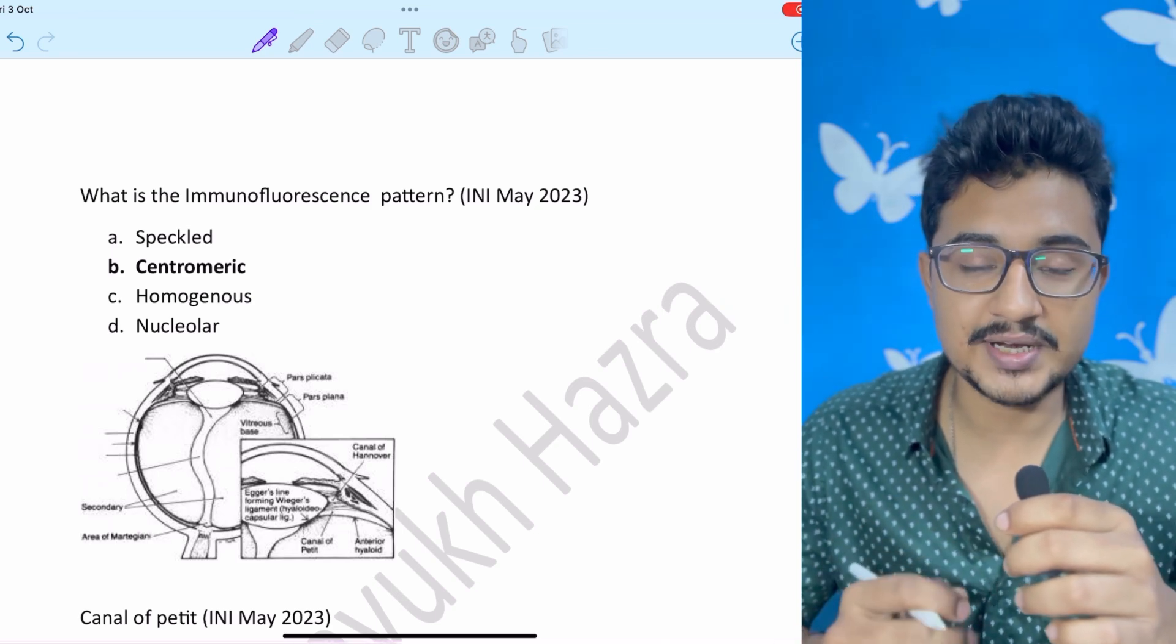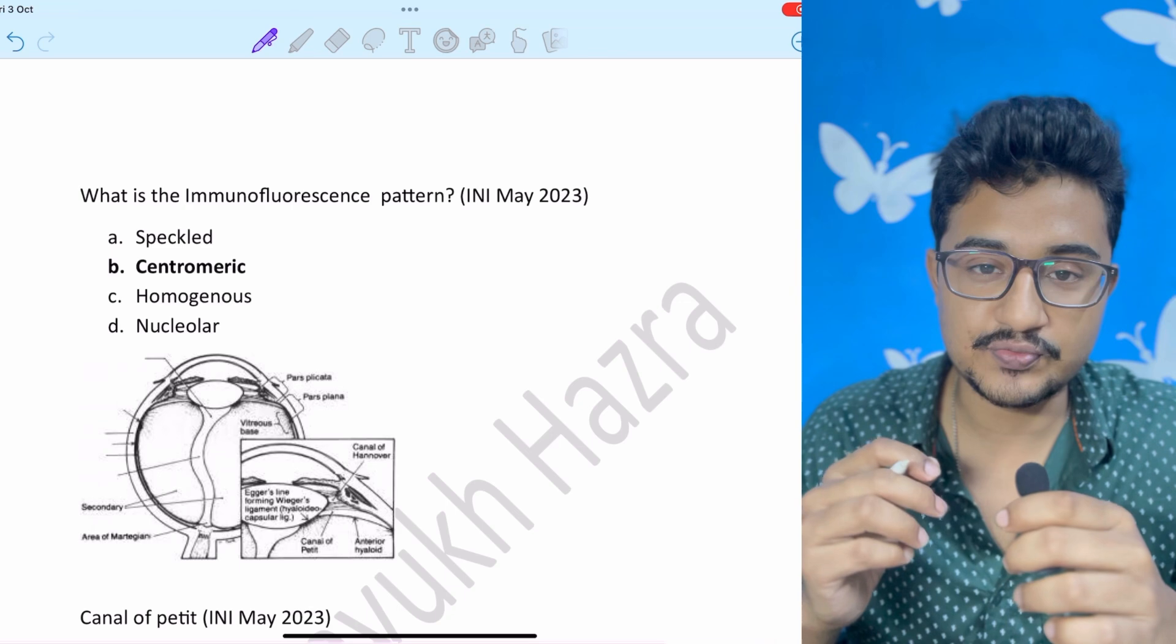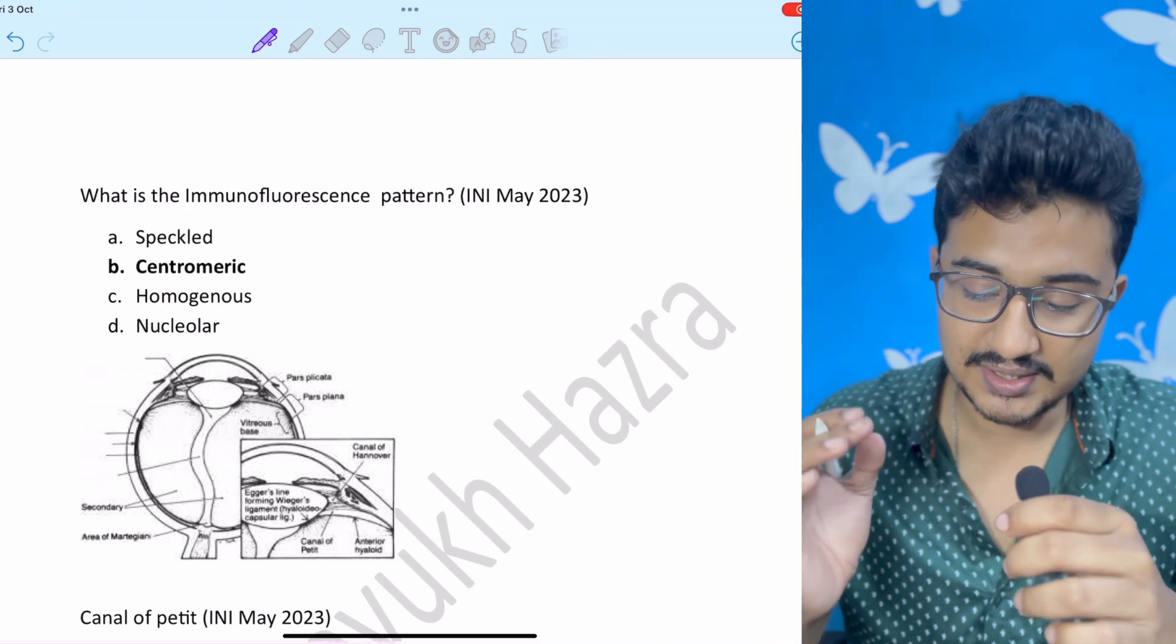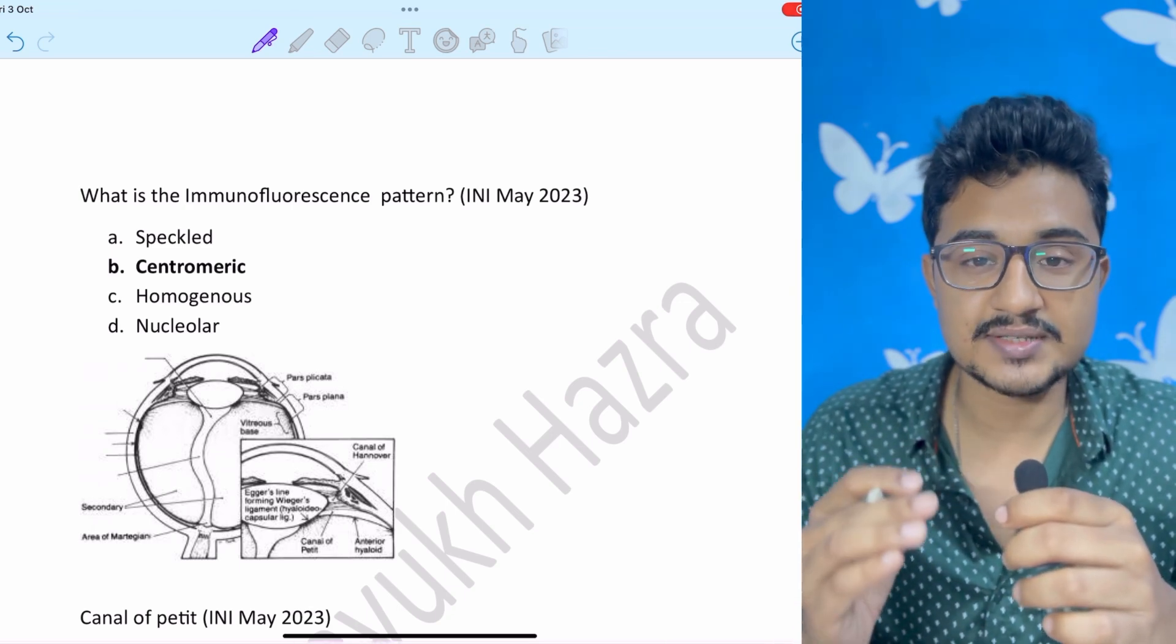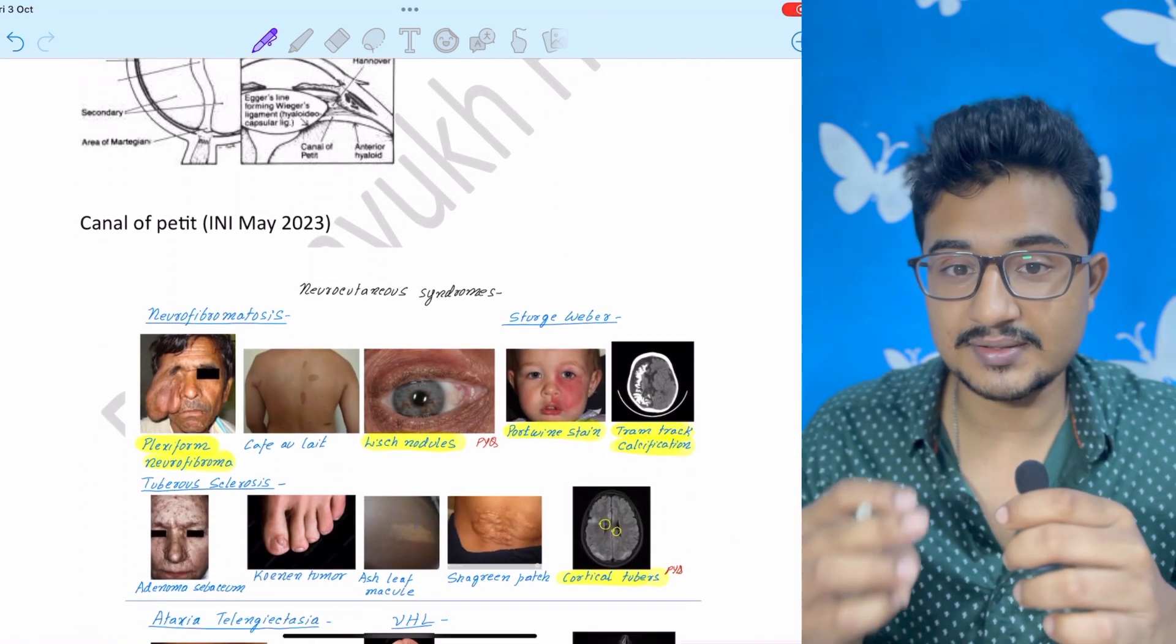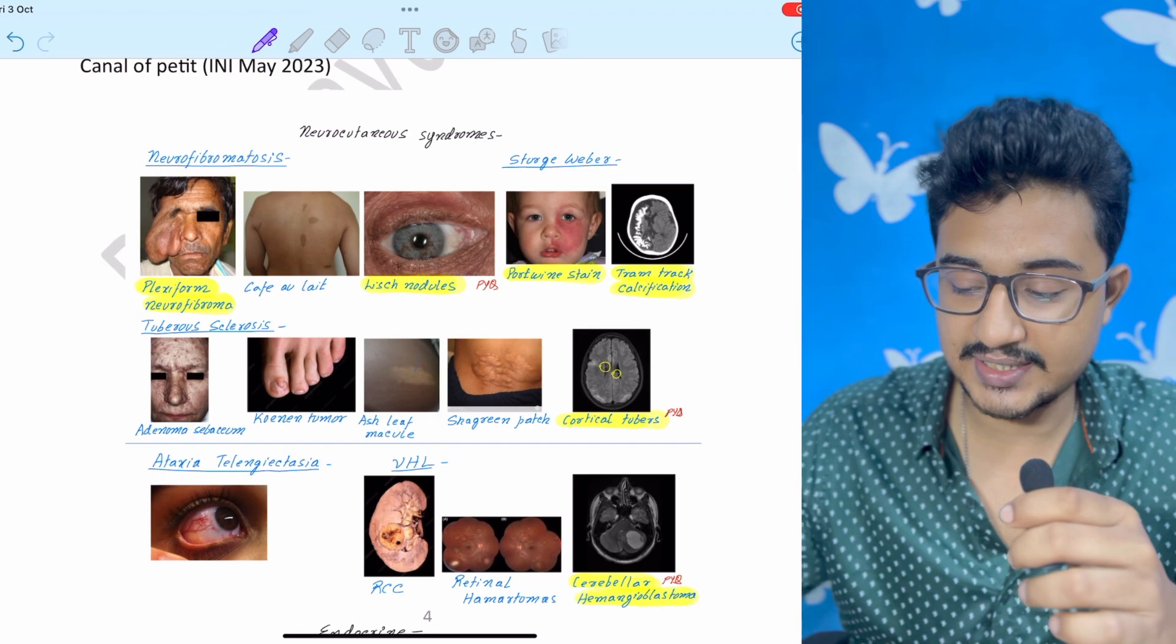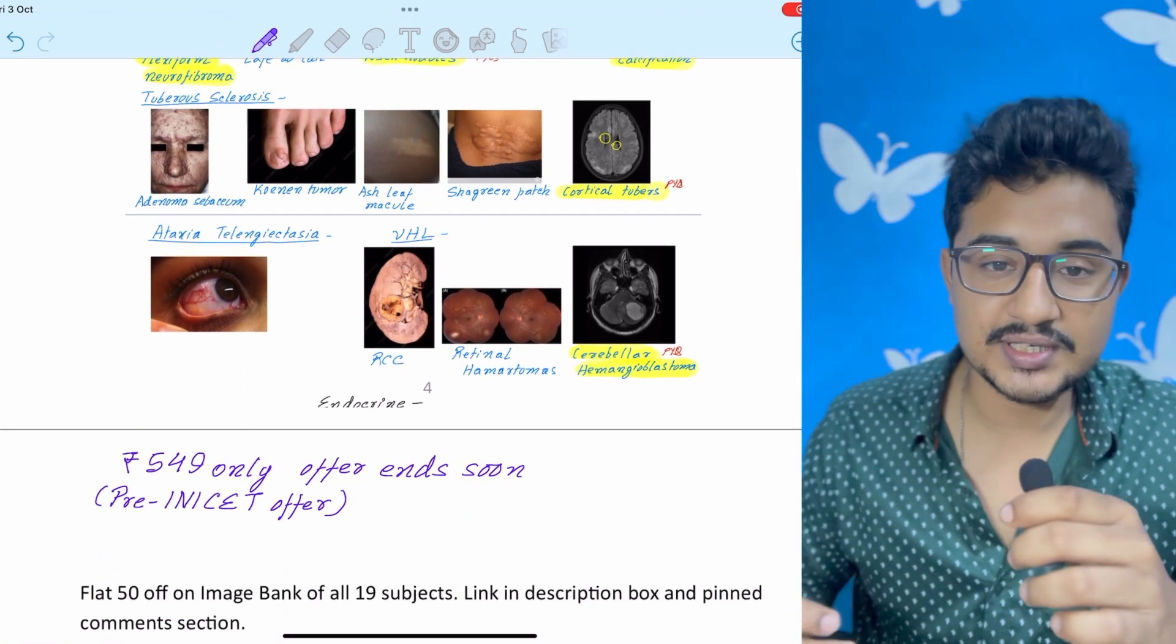Because in the notes due to copyright issues, they can't give all the classical images except the Wikipedia ones. So they love to ask the images from Researchgate, Wikipedia, Radiopedia, Dermnet, these all sites. So I have made a digital image bank of all 19 subjects having 1000 plus images.